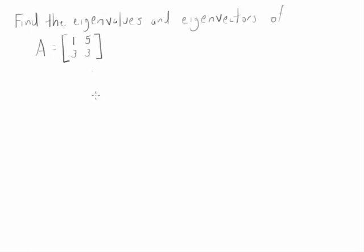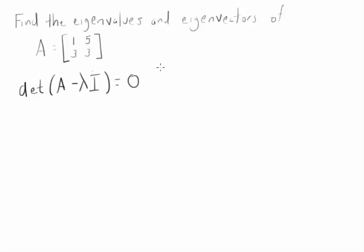We want to find some eigenvalues and eigenvectors. To find the eigenvalues, we want the determinant of A minus lambda I equal to zero.